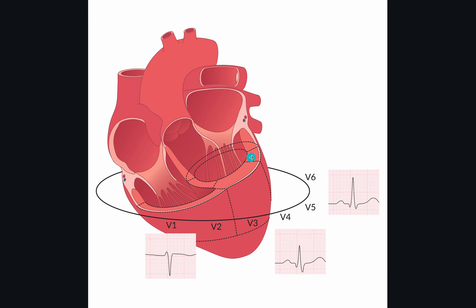The ventricles consist of a left ventricle, a right ventricle, and an interventricular septum. The first part to depolarize is the interventricular septum, and the direction of depolarization is from left to right. The reason for that is that the septal fascicle — the nervous tissue that depolarizes the left ventricle — comes from the left bundle branch.